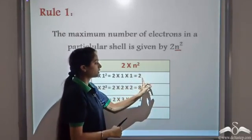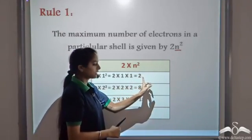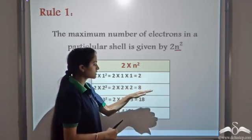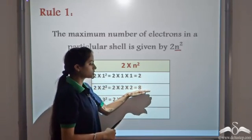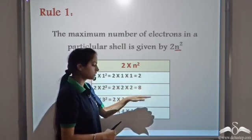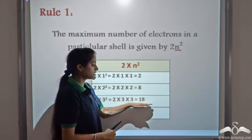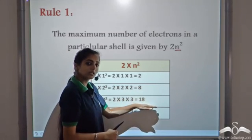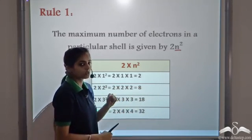So this means the first shell can have a maximum of 2 electrons, the second shell can have a maximum of 8 electrons, and the third shell can have a maximum of 18 electrons, and so on.